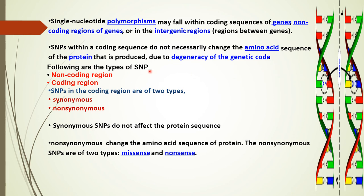Types of SNPs: one is non-coding region, another is coding region. SNPs in the coding region are further divided into synonymous and non-synonymous. Synonymous SNPs do not affect the protein sequence, whereas non-synonymous SNPs change the amino acid sequence of the protein. Non-synonymous SNPs are further divided into missense and nonsense.